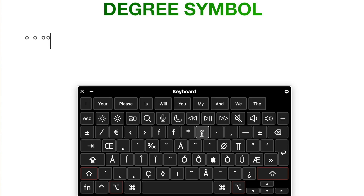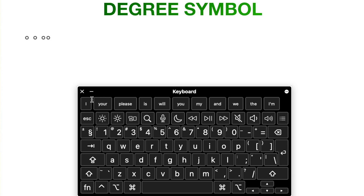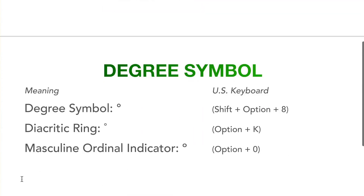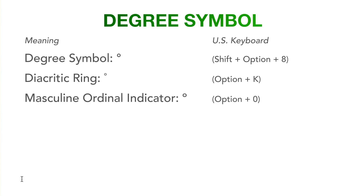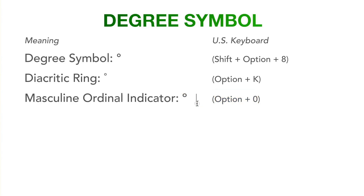There are two other shortcuts which will add a similar sign to this degree symbol, but they are in fact used for other purposes. The shortcut Option+K inserts a smaller ring — this one is used for typing the ring above a diacritic, and it's not a degree symbol. And if you do Option+0, it will make a sign which looks almost identical to the degree symbol, but in fact it's the masculine ordinal indicator, which is used in some written languages.